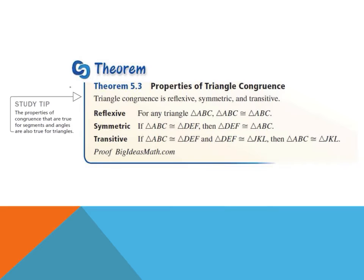Here are the three properties of triangle congruence. These properties are true for segments and angles, and also for triangles. Reflexive: a triangle is congruent to itself. Symmetric: if one triangle is congruent to another, then that other is congruent to the first. Transitive: if one triangle is congruent to a second, and the second is congruent to a third, then the first is congruent to the third.